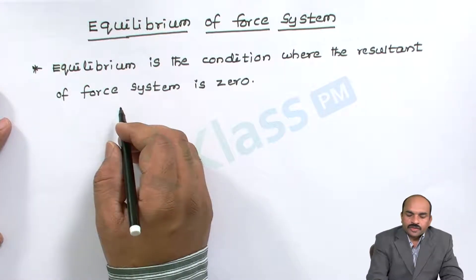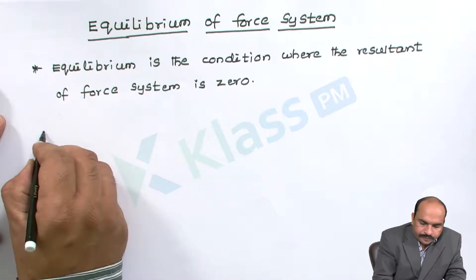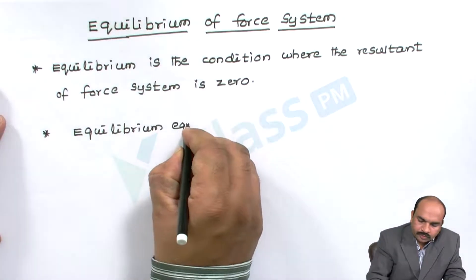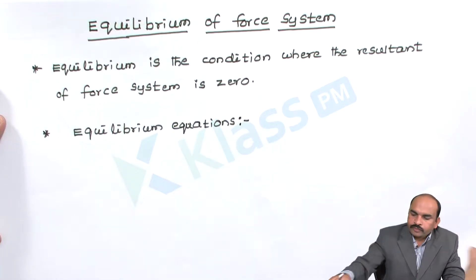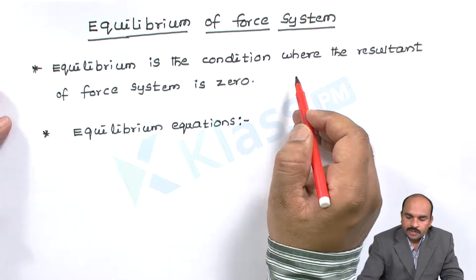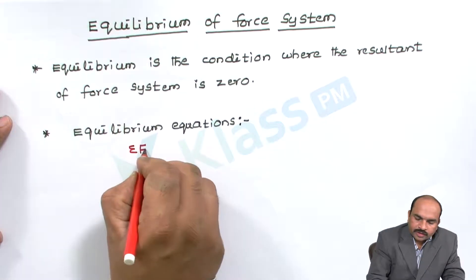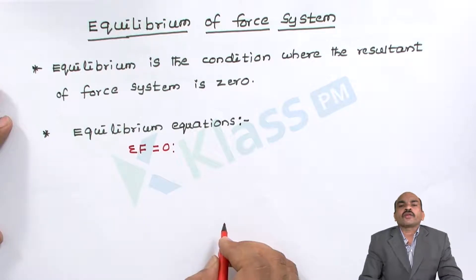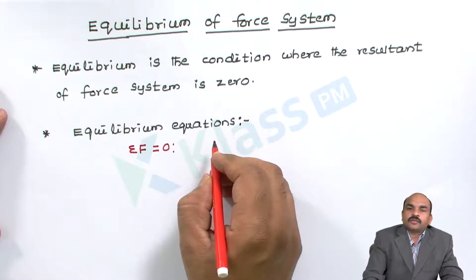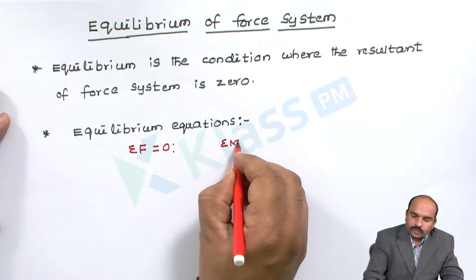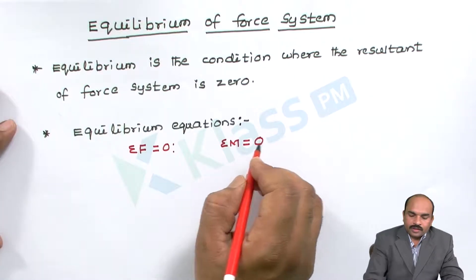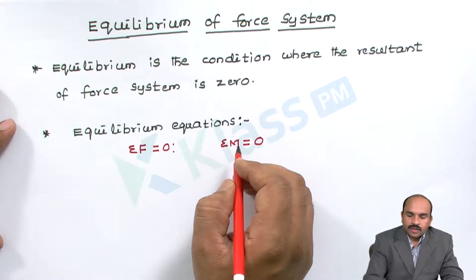Let us write the equilibrium equations for the force system. The resultant of the force system equal to zero means sum of all the forces equal to zero — this is one equilibrium equation. When the sum of forces equals zero, the sum of moments will also be zero, because moment equals force into distance. These are the two equations that come under equilibrium equations.